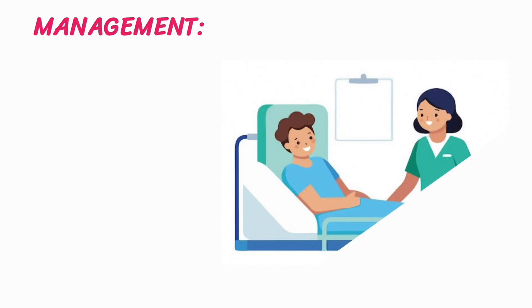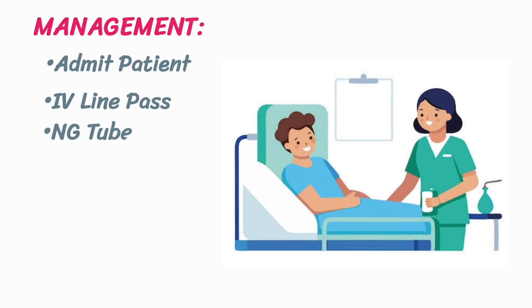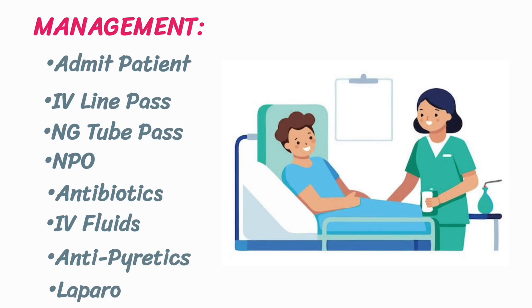Finally, let's discuss the management of peritonitis. Admit the patient to a medical facility. Establish an IV line. Insert a nasogastric (NG) tube. Keep the patient NPO — nothing by mouth. Administer antibiotics and IV fluids. Administer antipyretics. Perform a laparotomy if necessary.